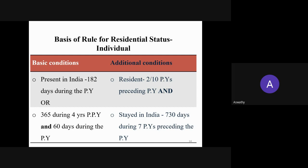In addition to the basic conditions, we have two additional conditions. The first additional condition is that the person has been a resident in India in at least 2 out of 10 preceding previous years. The second additional condition is that he has been in India for at least 730 days out of 7 preceding previous years. To summarize: basic condition one is 182 days; basic condition two is 365 out of 4 years and 60 days; additional conditions are 2 out of 10 and 730 out of 7.